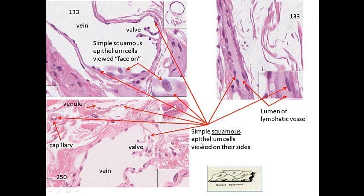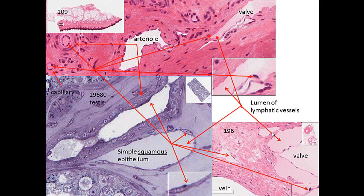If we look at simple squamous epithelium viewed from the side, we see flattened cells. But viewed face-on, these flattened cells are oval in the other dimension and the cell is flat. You can see simple squamous epithelium in capillaries, venules, and valves — all lining blood vessels and lymphatics. These are the endothelial cells, simple squamous epithelium called endothelium because it comes from the mesoderm. Arterioles have these cells, and lymphatics also have simple squamous epithelium. All these blood vessels have endothelial cells, which are simple squamous epithelium known as endothelium.